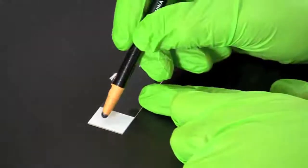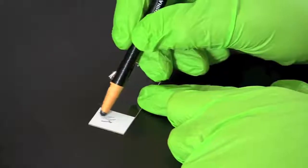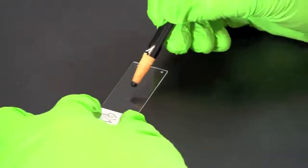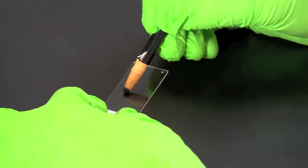Using a wax pencil, label a microscope slide with your initials. Then, draw a circle about one centimeter in diameter on the slide.